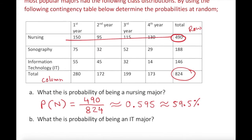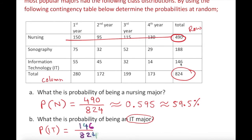The next question asks: what is the probability of being an IT major? The probability of IT equals 146 — the IT total — over 824, the grand total. Converting to three decimal places gives approximately 0.177, which is 17.7 percent.